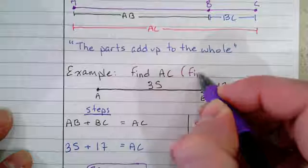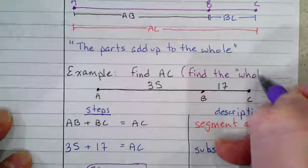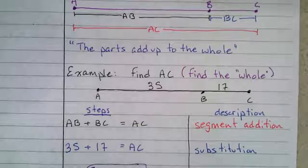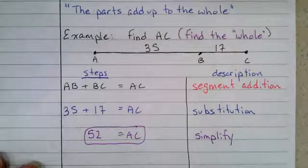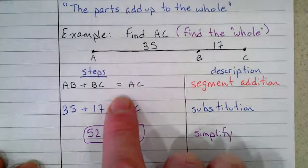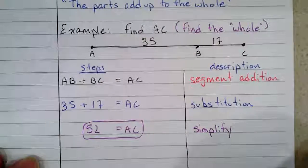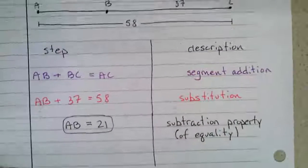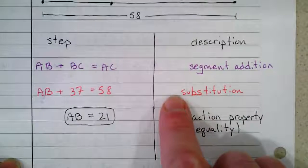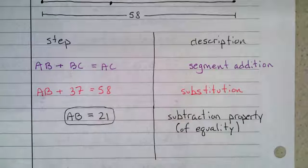Two different types here to deal with. Either way, the steps were: just state the segment addition property equation there, substitute the values, and then in this case we had to simplify. The other case here, it was just basically state that segment addition equation, do your substitution, and then we had to do a subtraction before we were done. Pretty easy.